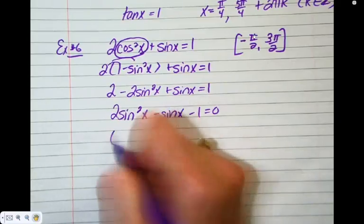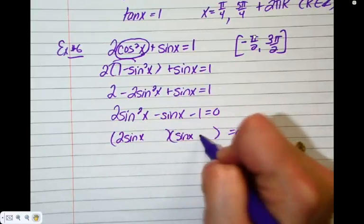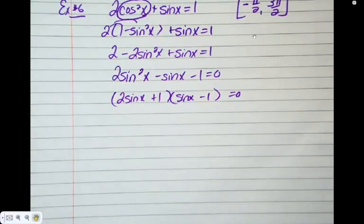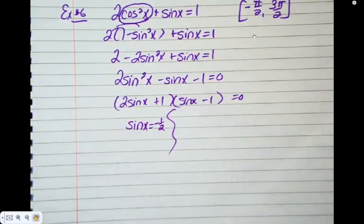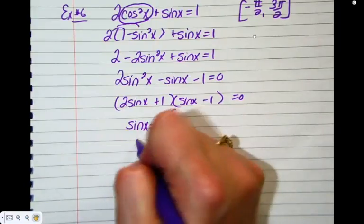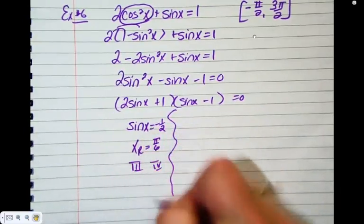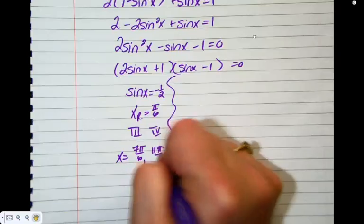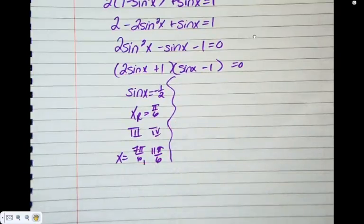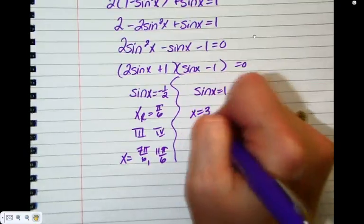Questions? 2 sine X plus 1, sine X minus 1. Sine X equals negative 1 half. Reference angle pi on 6. Quadrants 3 and 4. So X equals 7 pi on 6 and 11 pi on 6. On the other side, sine X equals 1. That's a Y value of 1, so top of the circle. So X is pi on 2.